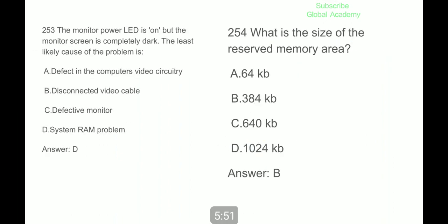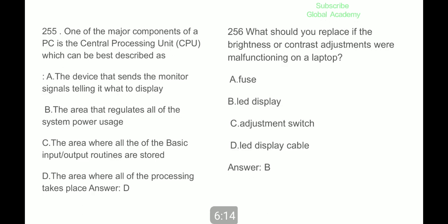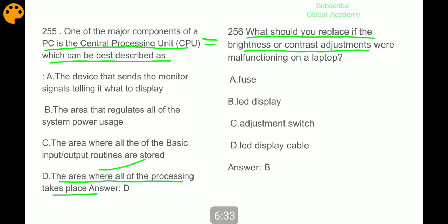The monitor power LED is on but the monitor screen is completely dark. The least likely cause of the problem is system RAM problem. What is the size of the reserved memory area? 384 KB. One of the major components of a PC is central processing unit or CPU, which can be best described as the area where all the processing takes place. What should you replace if the brightness or contrast adjustments were malfunctioning on a laptop? LED display.